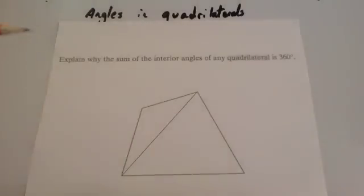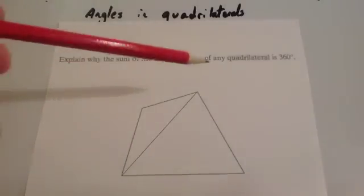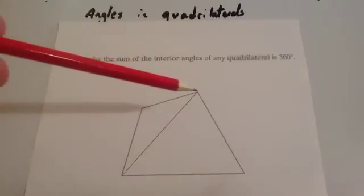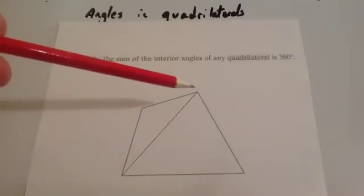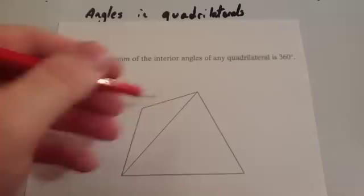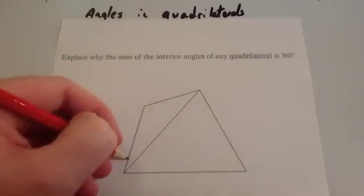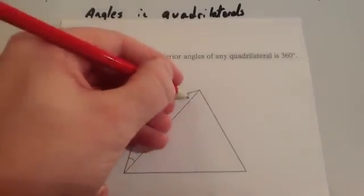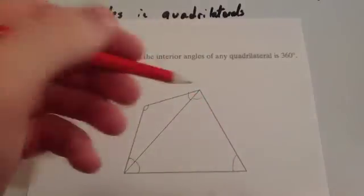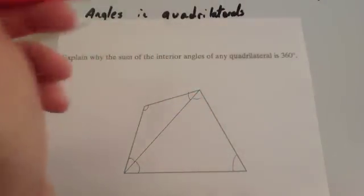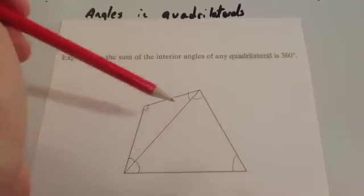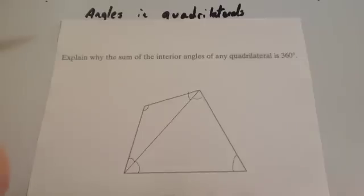Here's another type of question: explain why the sum of the interior angles of any quadrilateral is 360 degrees. I've joined two opposite points with a ruler, giving two triangles. The angles in a triangle add up to 180, so the angles in each triangle add up to 180. Because you can split a quadrilateral into two triangles, the angles in the quadrilateral add up to 2 × 180 = 360 degrees.